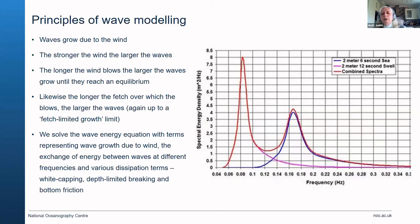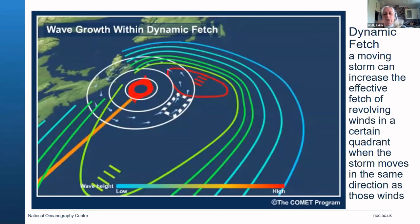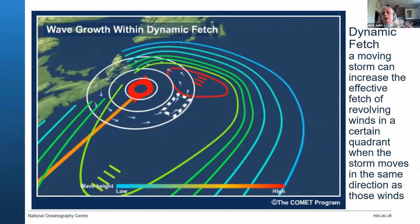This spectral approach is a very useful way of describing waves in the sea rather than representing every single wave. There is also a dynamic fetch effect — when a storm moves at a certain speed, the revolving winds in a certain quadrant can add to the generation. If the waves are traveling at the same speed as the storm, they continuously receive energy instead of the storm moving on and leaving the waves behind. So you get an effect whereby waves in a certain quadrant are enhanced.